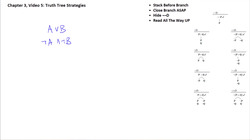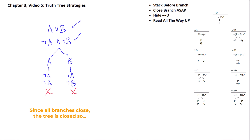First, a simple example of stacking before you branch. Suppose we had two fairly simple formulas and we're going to do a tree for them. One way is to decompose the top one first, which branches since it's a disjunction, into A on one branch and B on the other. When we decompose the second formula, a conjunction, we stack its two components under each branch, and both branches close.